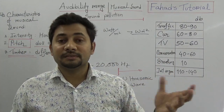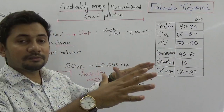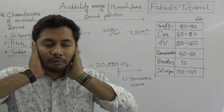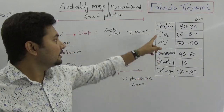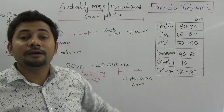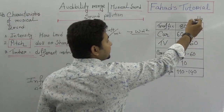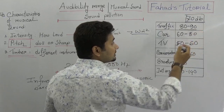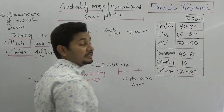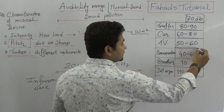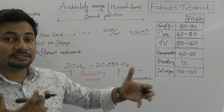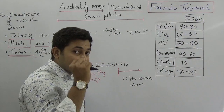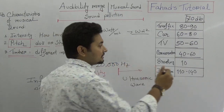In developing countries with more cars on roads honking all the time, pedestrians and passengers face more problems. Traffic noise is 80 to 90 decibels, cars produce 60 to 80 decibels, and televisions we hear are 50 to 60 decibels. Day-to-day conversations are around 40 to 60 decibels. Even breathing produces about 10 decibels. We can actually tolerate up to around 70 decibels.